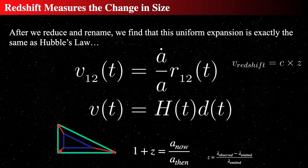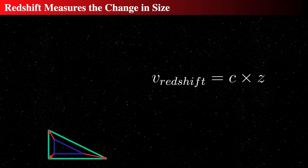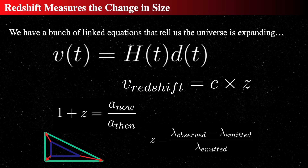We've got redshift related to the stretching of the wavelength, which is related to the scale factor, which is related to the Hubble parameter — all these things are related. If you measure the redshift, you're measuring the Hubble parameter. These linked equations tell us that knowing the redshift and knowing the distance gives you the Hubble parameter, which is how the scale factor changes with time.